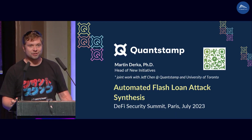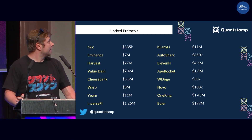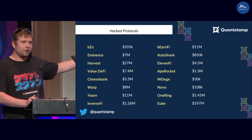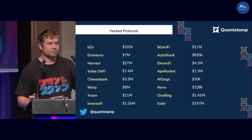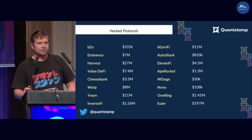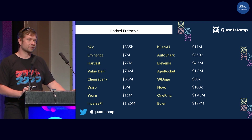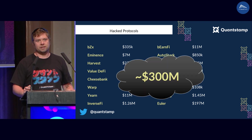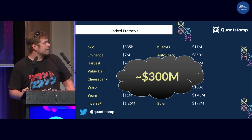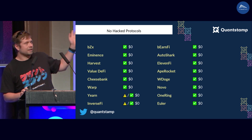I'm Martin from Quantstamp, and I want to talk today about flash loans and how we can synthesize flash loans and attack vectors automatically. Here is a list of protocols — and you can guess that all of them were hacked within the period of 2020 up until 2023 using flash loans. Most notably, the largest one, Euler, was hacked for nearly 200 million dollars this year. Altogether, this sums up to 300 million US dollars in damages.